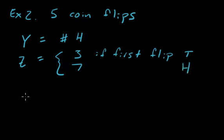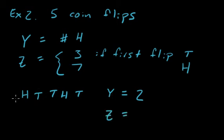You could do your random event, do what's called a trial. Say you get heads, tails, tails, heads, tails. y is the number of heads, so that's 2. And z depends on just the first flip - the first flip is heads, so z equals 7 in this case.